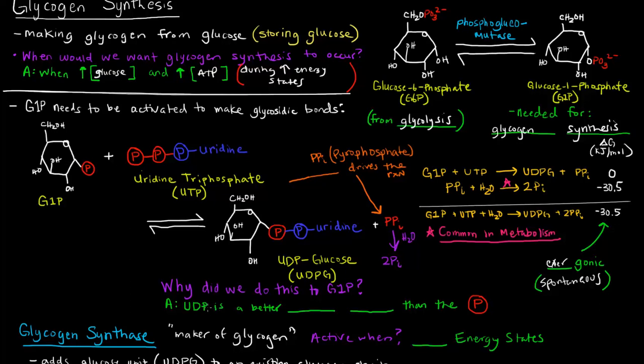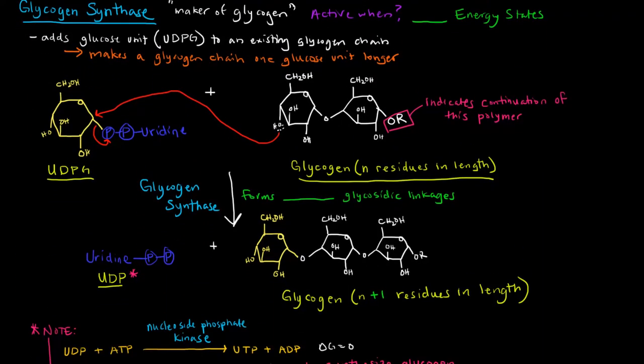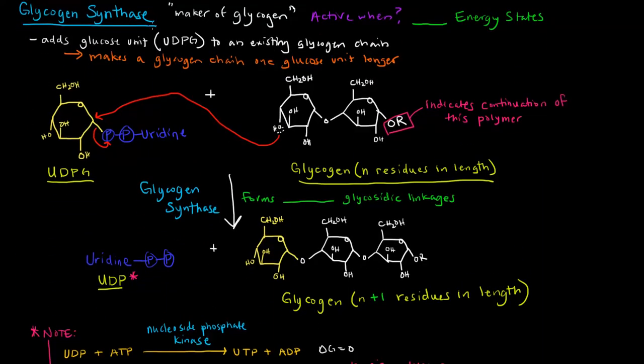The reason why is because UDP, having this UDP on here instead of just this phosphate, this UDP is a better leaving group than the phosphate group. Which brings me to my next point about the enzyme glycogen synthase. Glycogen synthase, quite simply, is the maker of glycogen.